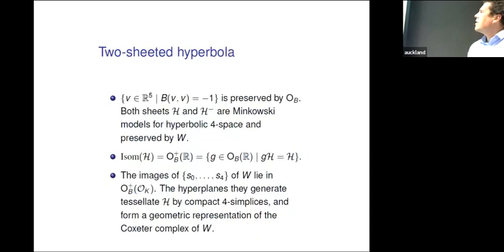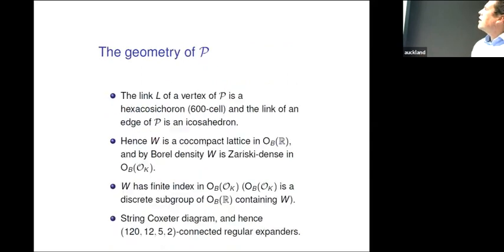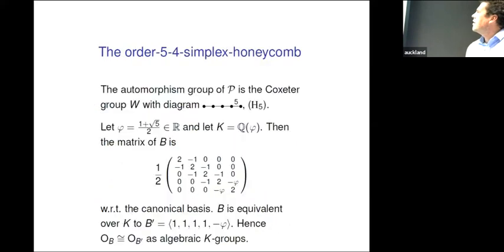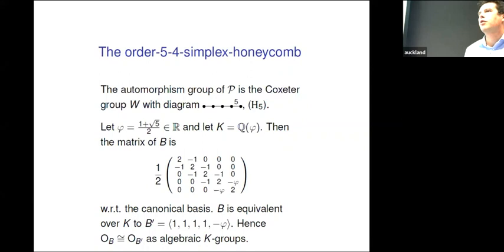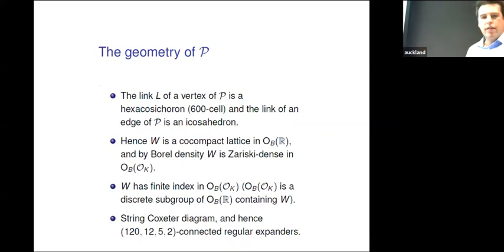What is the link of a vertex? The vertex corresponds to choosing M as the first node of the diagram, leaving the remaining diagram 3-3-5. This is a hexacosichoron — or the 600-cell. The link of an edge: delete the first two nodes, and you're left with just the last three, giving you a 3-5 diagram — that's an icosahedron. So very beautiful regular solids appear there. In this case, you can conclude the conditions of Salehi Golsefidy are met using a result of Borel, which is a little easier than the general case. This string Coxeter diagram gives you the parameters 120-12-5-2.